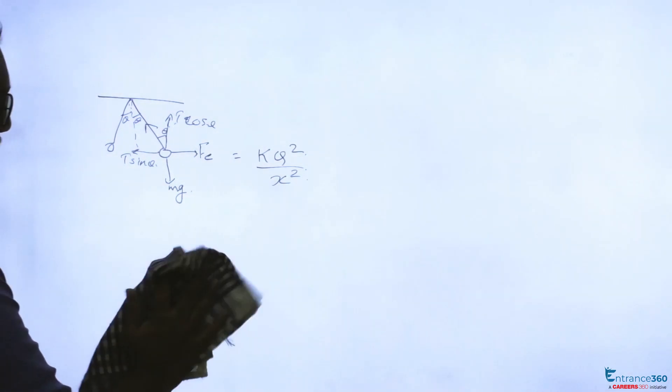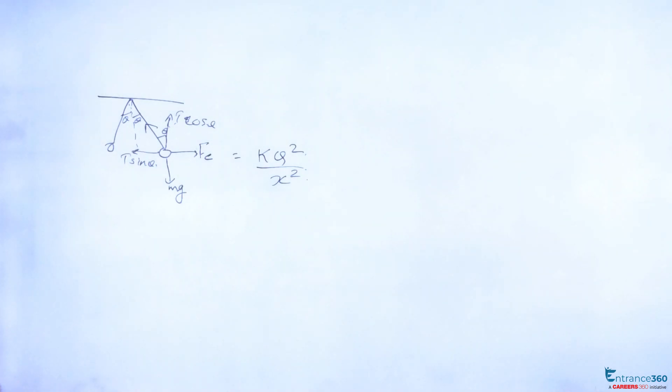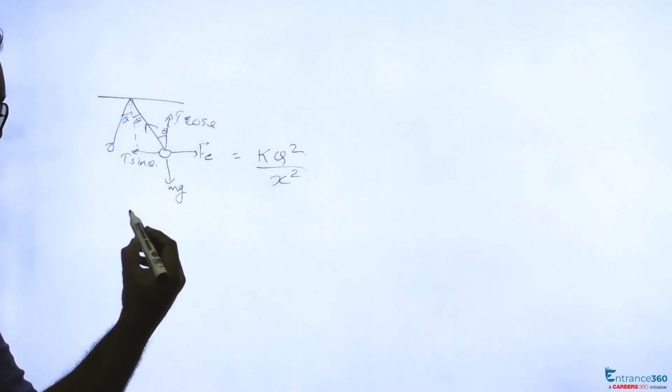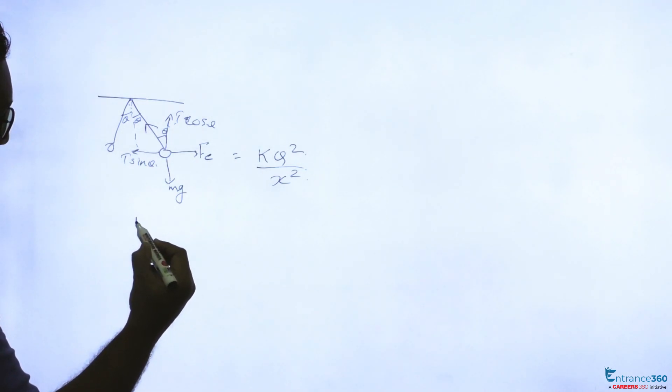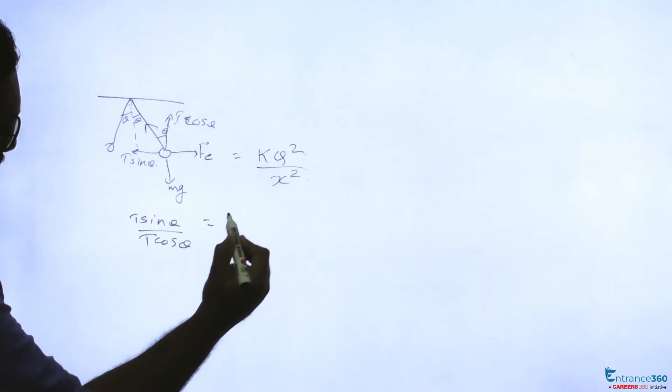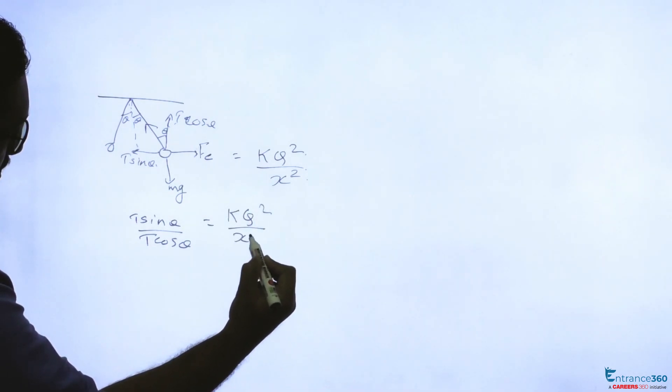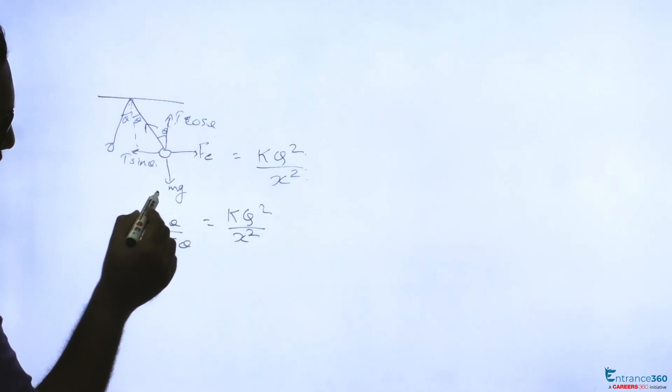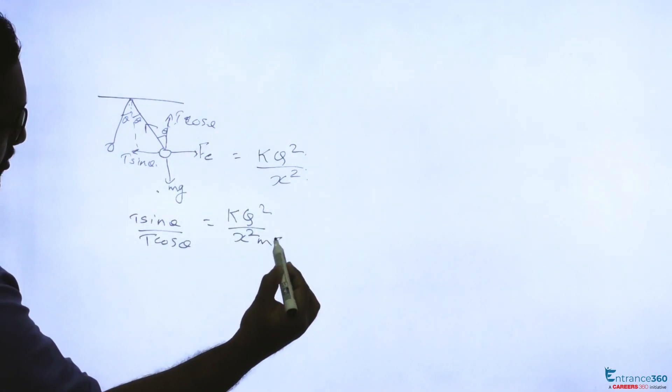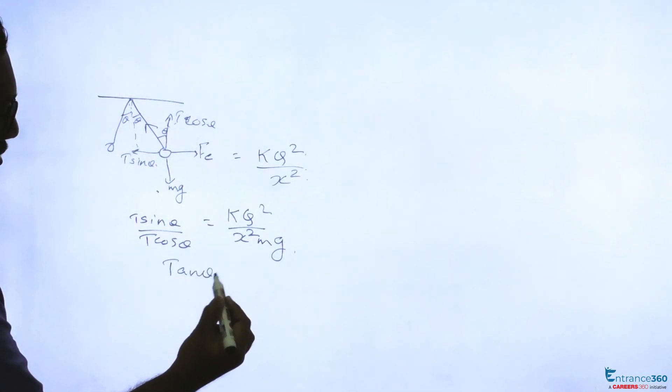Now we can write T sine theta by T cos theta equal to k q square by x square. That is Fe by mg, which gives tan theta equals k q square by x square mg.